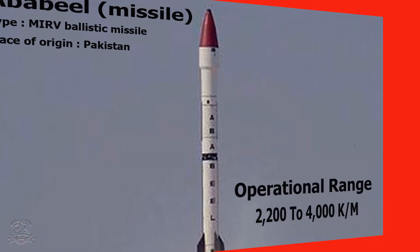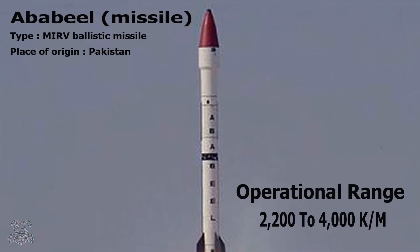Ababil Missile: Type – MIRV Ballistic Missile, Place of Origin – Pakistan, Operational Range – 2,200–4,000 km.